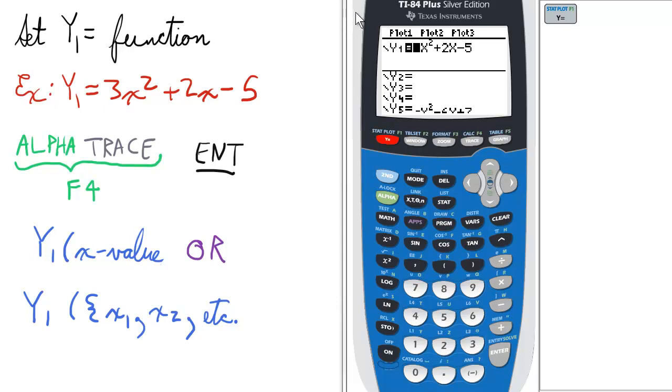To find the f of x values, or the y values of a specific function, first you need the function. In this case, we're going to set y1 equals to 3x squared plus 2x minus 5.